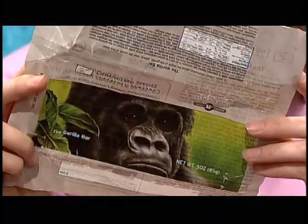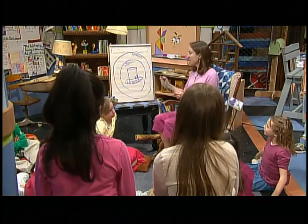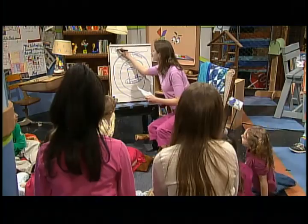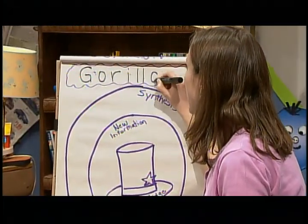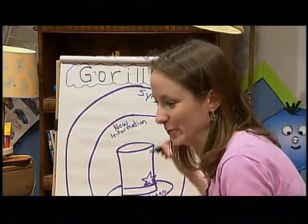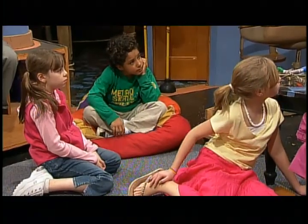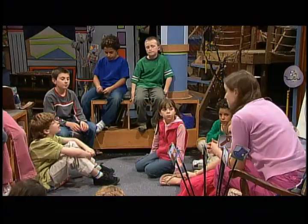That book actually changed the way Trent looks at the world — or at least the way he looks at his hamster. Today we are going to practice some steps to help us synthesize. With a candy bar wrapper? Yeah. I know what that is — it's one of those animal wrappers. Well, this one is about gorillas. So what I want you to do now is think about everything you know about gorillas. Now share with your neighbor, and you can spread out if you need to.